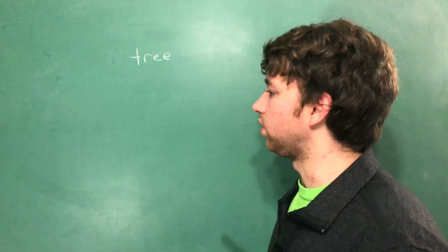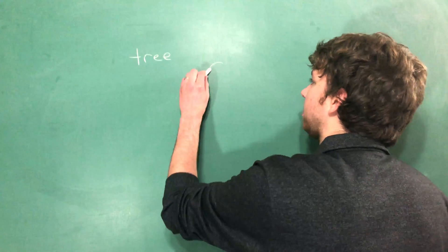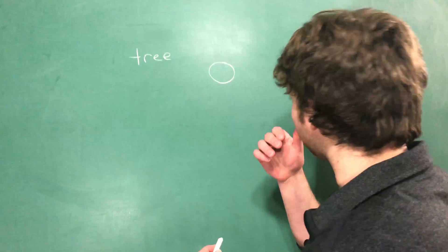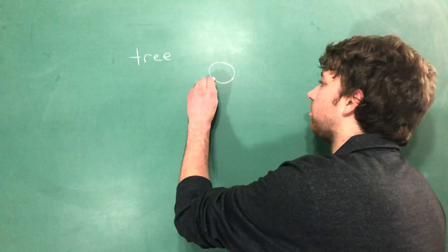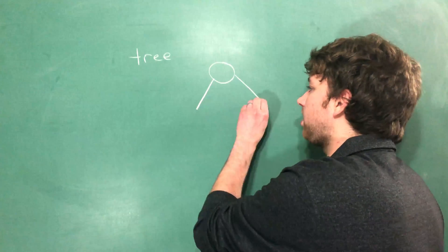To make a tree, we start with these crazy shapes—in computer science we call them circles—and you have these lines between the circles.